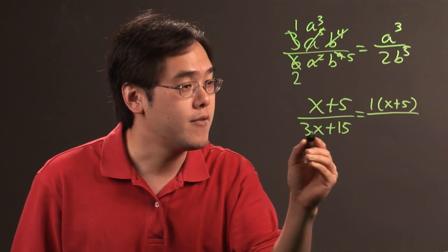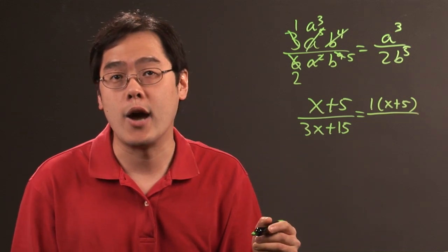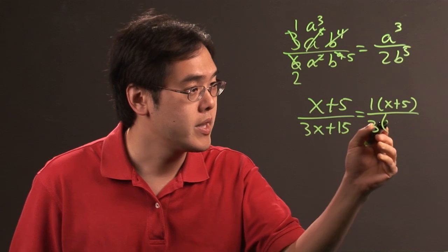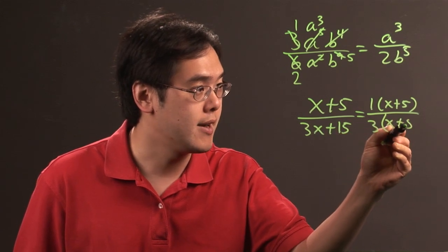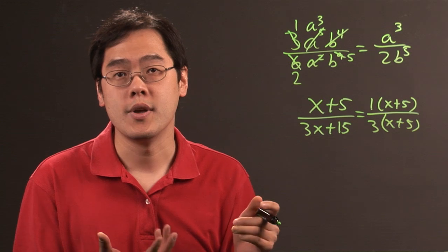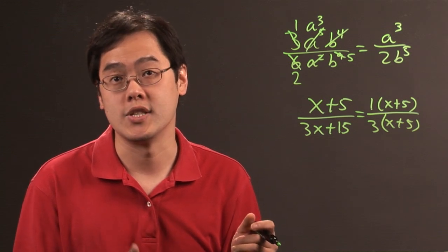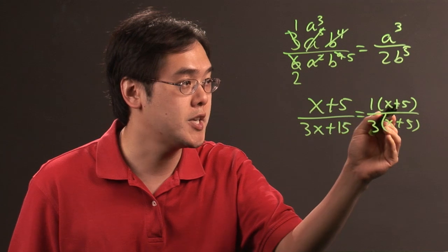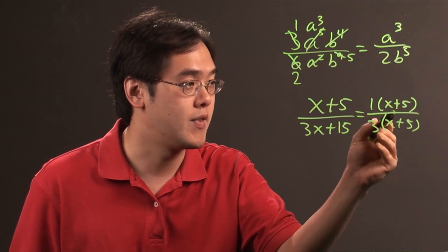And then for the 3x plus 15, you can factor out a 3 because that's what they have in common. And then what's left over, you have an x and then plus 5. Now notice the difference between this and this is that they're separated. The operation that separates the terms is actually multiplication, not straight addition here. So what happens is they have 1 times x plus 5 and 3 times x plus 5.